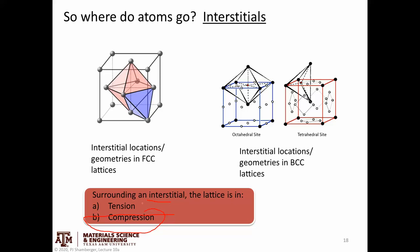Around interstitials we have a little bit of compression, and this is important for understanding how different point defects interact, particularly with dislocations which can also have regions of tension and compression. Interstitial locations are defined by the coordination geometries in the lattice. The pinkish site here is an example of an octahedral interstitial site — surrounded by six atoms forming an octahedron, with four on the equator and one each at the north and south poles. The blue shape here is a tetrahedron, and the site in the middle of that tetrahedron is a tetrahedral interstitial site.